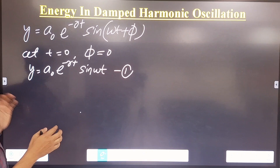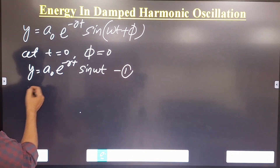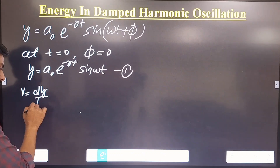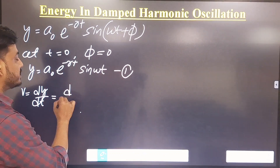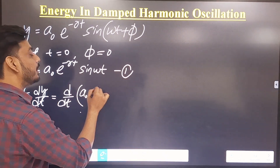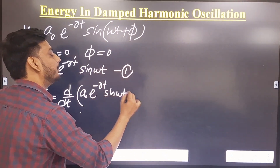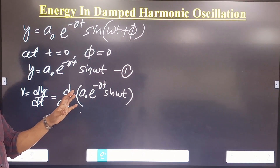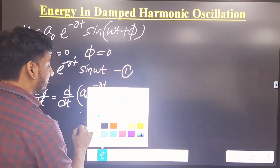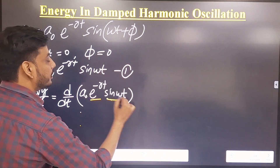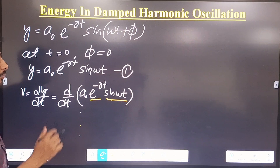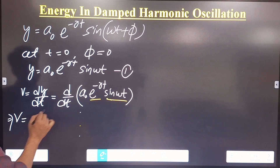This is the expression we get for displacement. We can also calculate velocity, which is nothing but the rate of change of displacement. So dy/dt of displacement is d/dt of a-naught e to the power minus rt times sin(ωt). Now, since we have two different terms that both depend on t, we will use the product rule (u·v formula) for calculating the derivative.